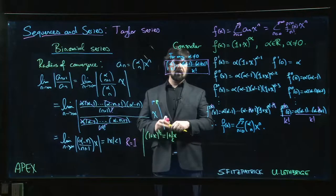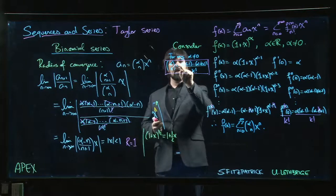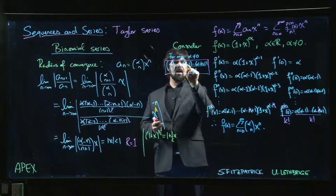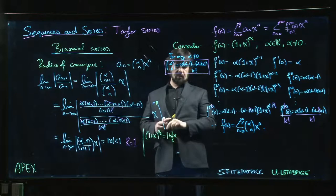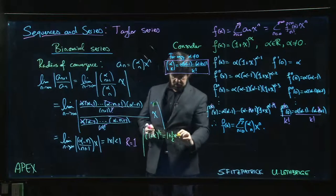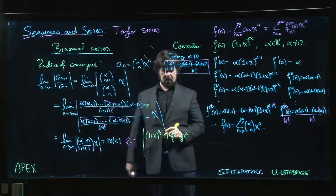What's the next term? The next term is going to be (1/2) times (1/2 minus 1), so (1/2) times (-1/2), and then divide it by 2 factorial. So we get like minus 1/8 x squared.